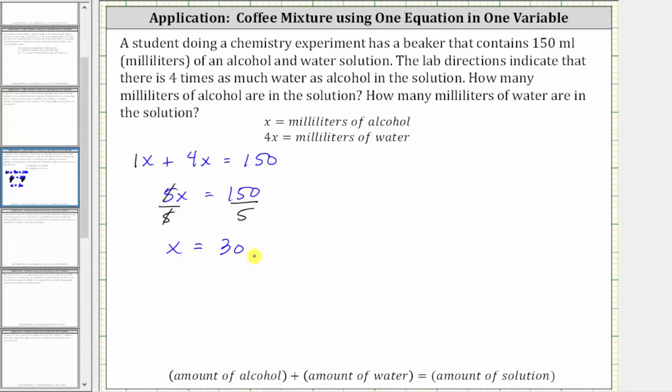Since x is equal to 30, we now know the solution contains 30 milliliters of alcohol. To find the amount of water, we need to evaluate the expression 4x, which is equal to four times 30, giving us 120 milliliters of water in the solution. So as a complete sentence, we now know the solution contains 30 milliliters of alcohol and 120 milliliters of water.